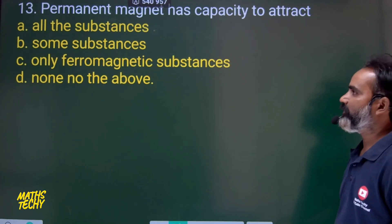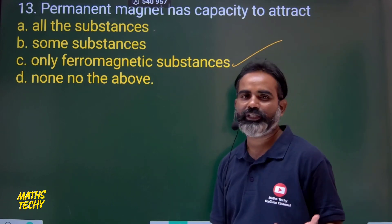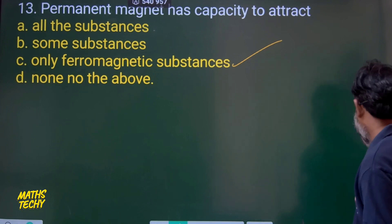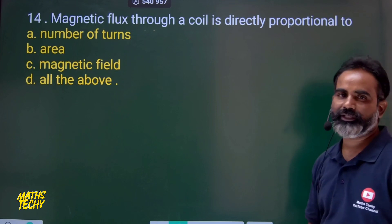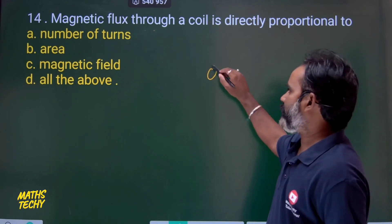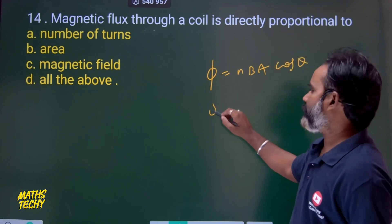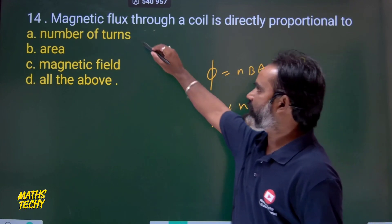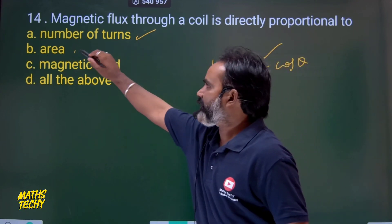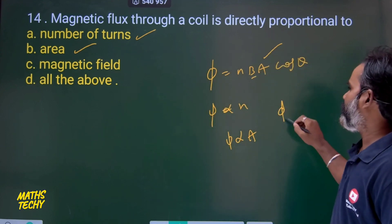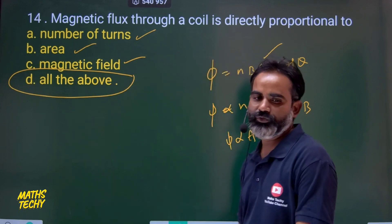Question 13: A permanent magnet has the capacity to attract only ferromagnetic substances — this is a direct fact from the properties of permanent magnets. Question 14: Magnetic flux through a coil is directly proportional to — using the expression Φ = NBA cos θ, flux is proportional to number of turns N, area A, and magnetic field B. Option D is the correct answer.